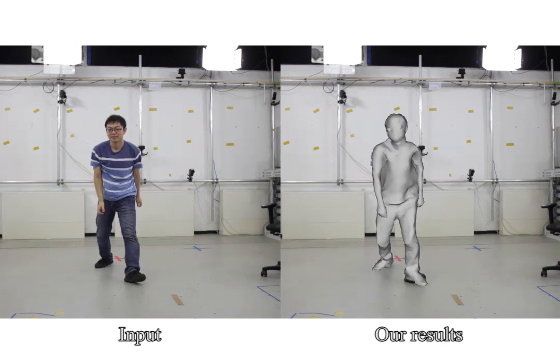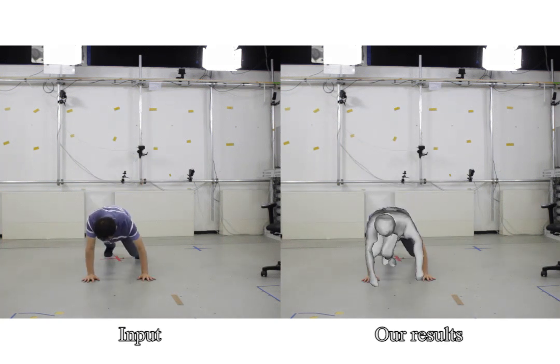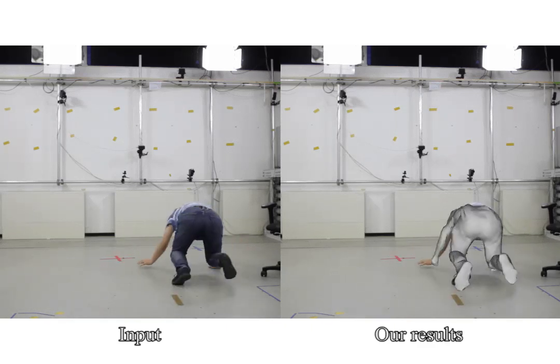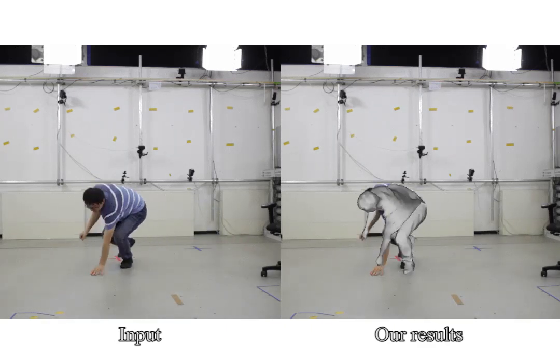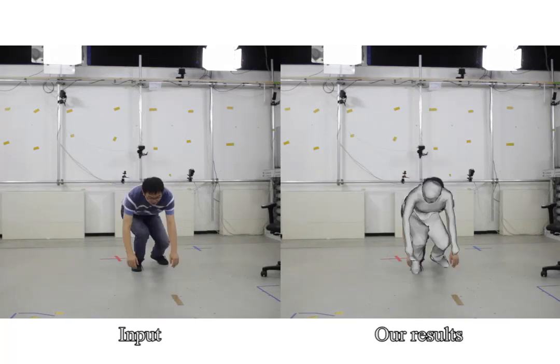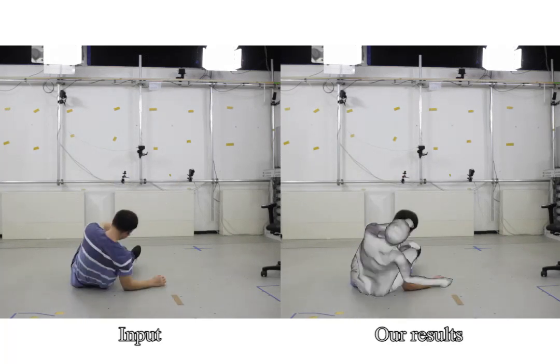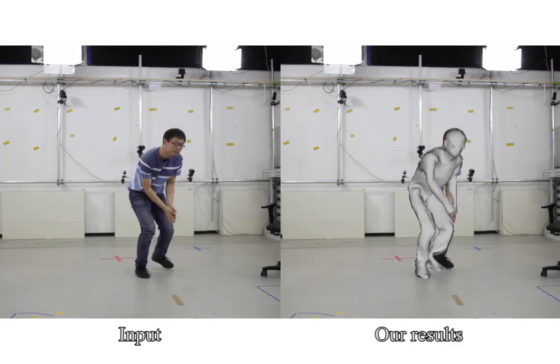As is common for learning methods, the underlying 3D joint regression deep network fails for extreme poses not seen in training. Our model fitting can often, but not always, correct such wrong poses which produces glitches in the tracking results. However, our performance capture approach robustly recovers from such situations.